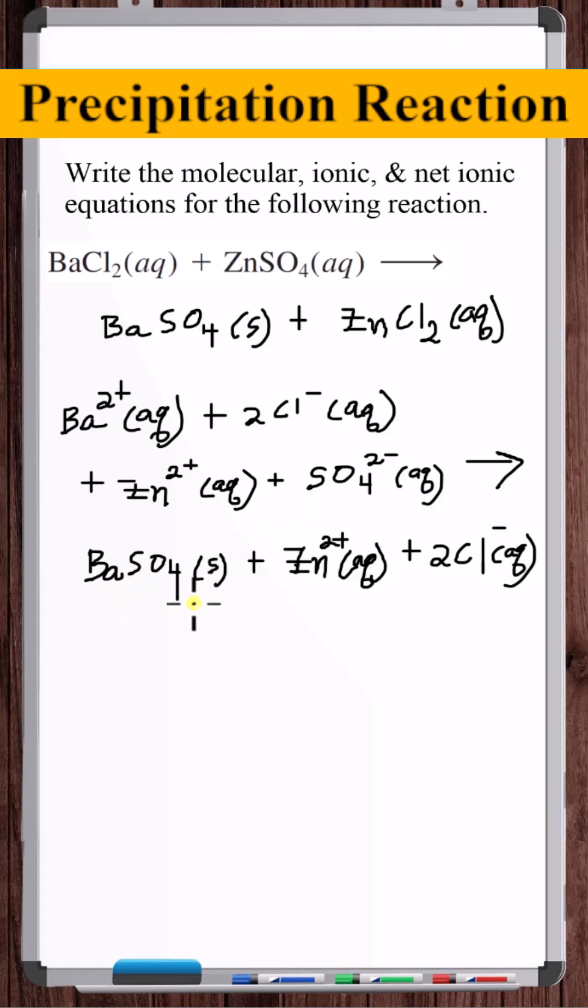To get the net ionic equation, we cancel the spectator ions. This is the net ionic equation.